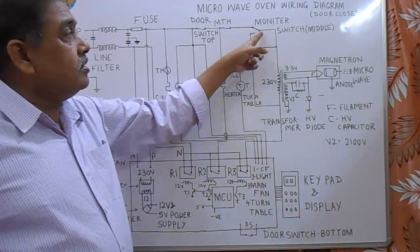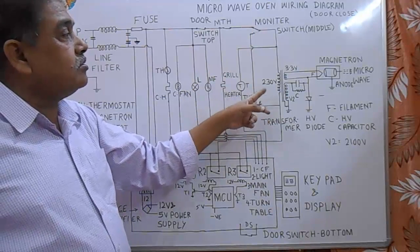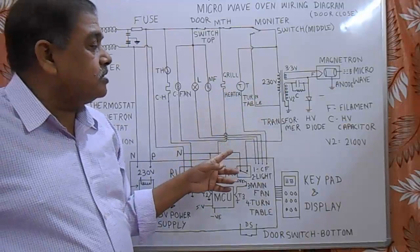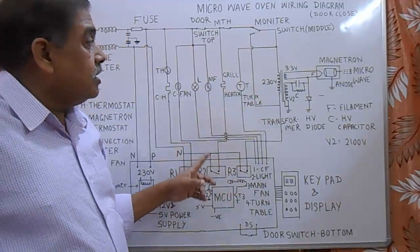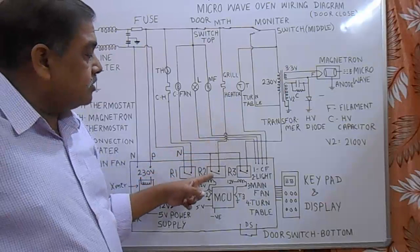So there is no chance of producing microwaves. And this grill unit is connected to the relay R2.